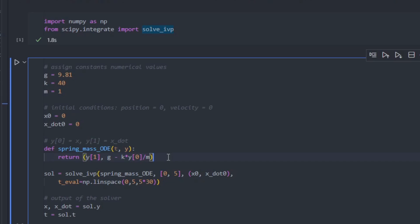For step three, we'll simulate our system. We'll use the solve initial value problem function from scipy. We'll enter the ODE function, the time limits, initial conditions, and a list of time values to evaluate x and x dot. Finally, we'll pull out x, x dot, and t from our simulation.